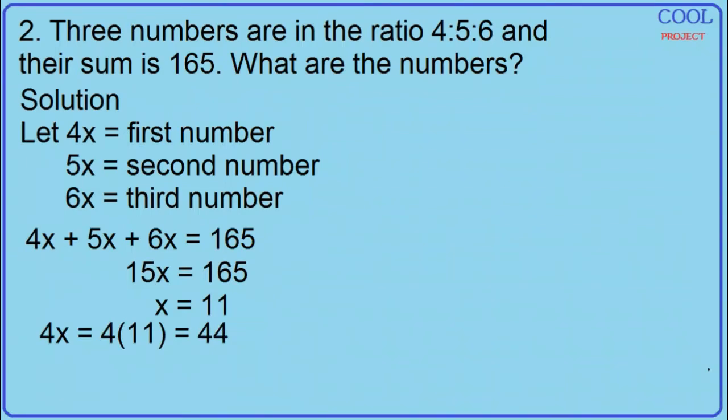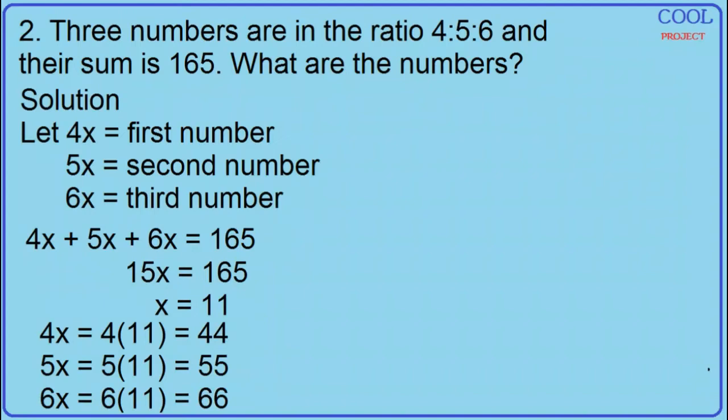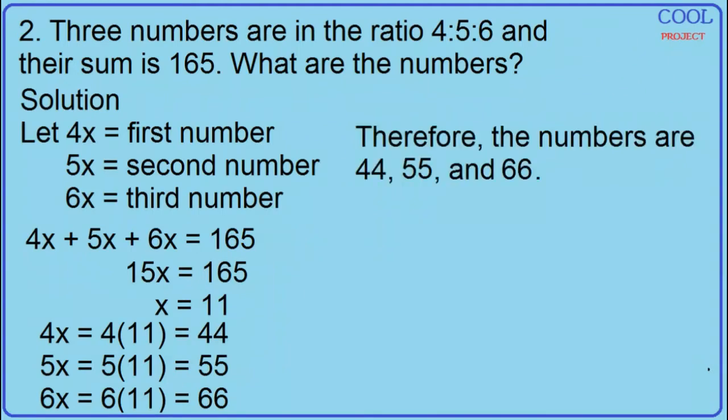Substitute 11 for x: 4x equals 4 times 11, which is equal to 44. 5x equals 5 times 11, which is equal to 55. 6x equals 6 times 11, which is equal to 66. Therefore, the numbers are 44, 55, and 66.